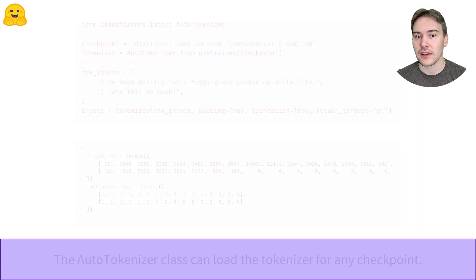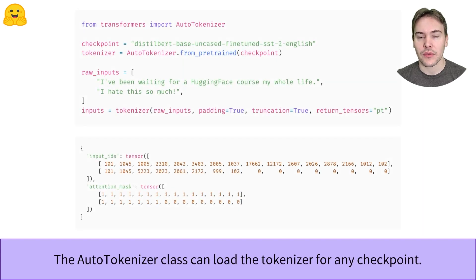To load such a tokenizer, the transformers library provides the AutoTokenizer API. The most important method of this class is from_pretrained, which will download and cache the configuration and the vocabulary associated to a given checkpoint. Here, the checkpoint used by default for the sentiment analysis pipeline is distilbert-base-uncased-finetuned-sst-2-english, which is a bit of a mouthful. We instantiate a tokenizer associated with that checkpoint, then feed it the two sentences.